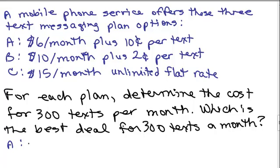For Plan A, you'd pay your $6 plus 300 texts times 10 cents each. That's 30 bucks. $36 a month. I can see that's not going to be the best option because my flat rate's $15.